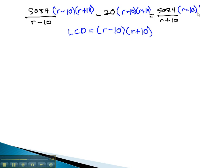When we do, we'll see a similar pattern unfold as we start to solve. The r minus 10's divide out, giving us 5084 times r plus 10 minus 20.